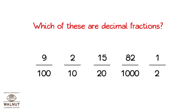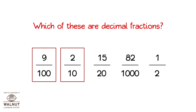Look at all these fractions. Which of these are decimal fractions? The denominator has to be either 10, 100, 1000, 10,000, or some such multiple of 10. Denominator 100 — decimal fraction. Denominator 10 — decimal fraction. Denominator 20 — not a decimal fraction. Denominator 1000 — decimal fraction. Denominator 2 — not a decimal fraction. So three fractions are decimal fractions.